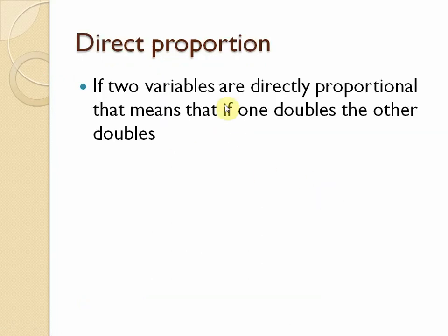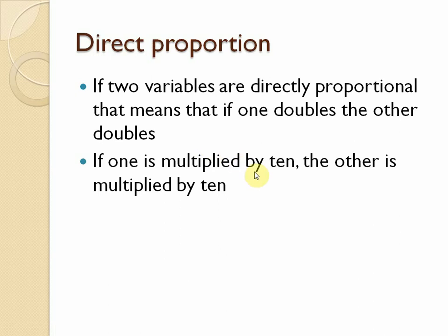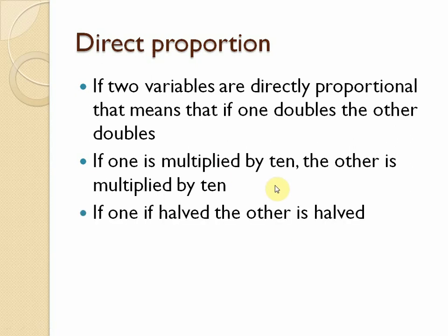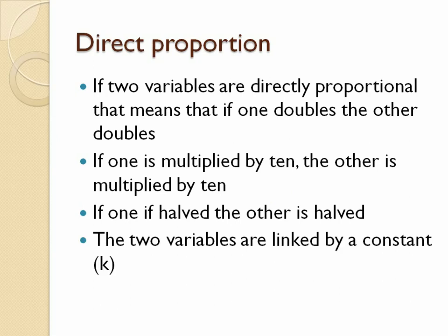Direct proportion means if two variables are directly proportional, if one doubles the other doubles. If one value is doubled it affects the other connected value. If one is multiplied by 10, the other is multiplied by 10. If one is halved, the other is halved. The two variables are linked by a constant — this is the main thing in proportionality.